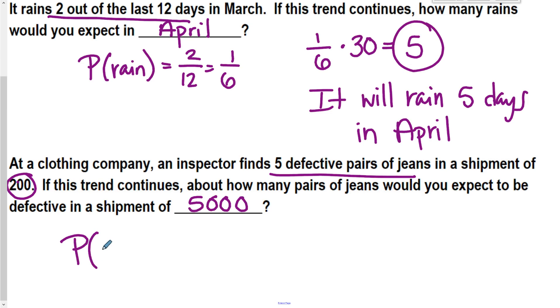Well, I know the probability of a defect happening is 5 over 200. So that reduces down to 1 over 40.